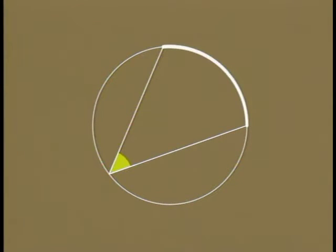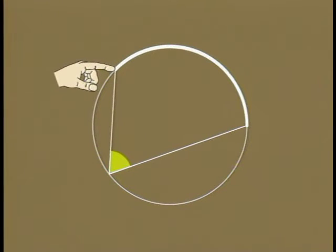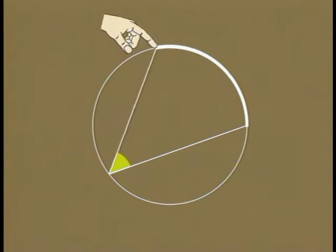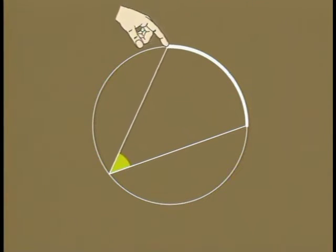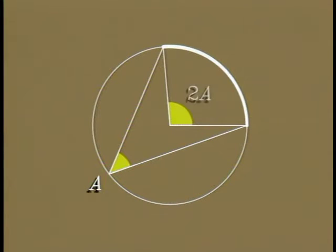This angle with its vertex on the circle is called an inscribed angle. It, too, cuts off an arc whose length depends on the size of the angle. Here's a surprising fact: the central angle that cuts off the same arc as an inscribed angle is twice as large.